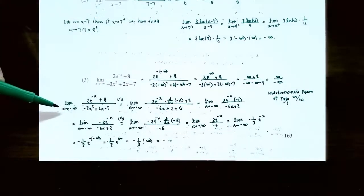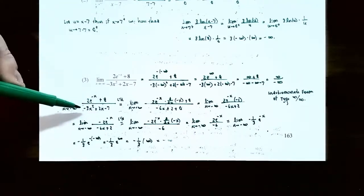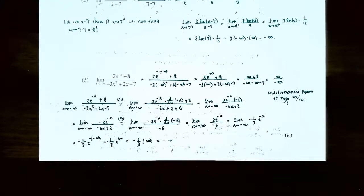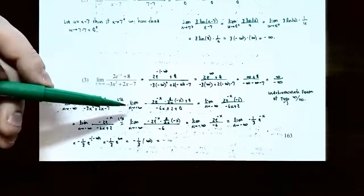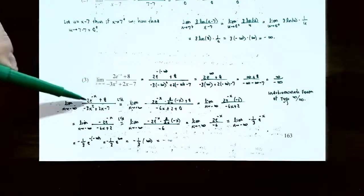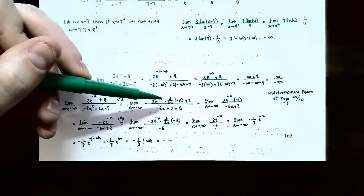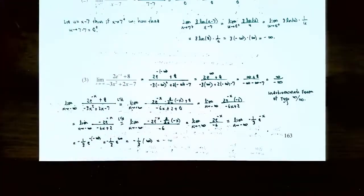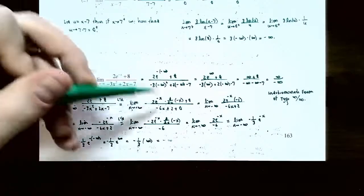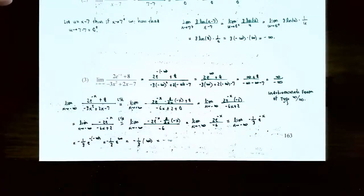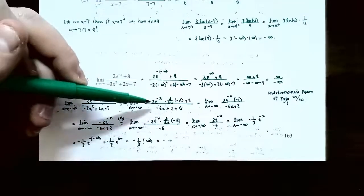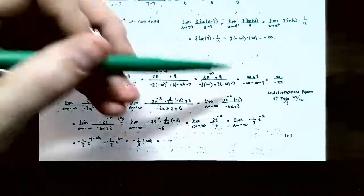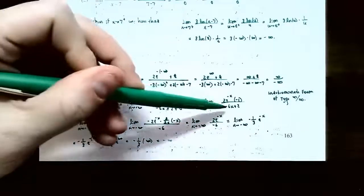Going back to the original limit as x approaches −∞ of (2e^(−x) + 8)/(−3x² + 2x − 7), we apply L'Hôpital's Rule: take the derivative of the numerator and denominator separately. The derivative of 2e^(−x) is 2e^(−x) times d/dx(−x) by the chain rule, and the derivative of 8 is 0. The derivative of the denominator: d/dx(−3x²) = −6x, d/dx(2x) = 2, d/dx(−7) = 0. So the derivative of the inside function d/dx(−x) = −1, giving a numerator of −2e^(−x) and denominator of −6x + 2.